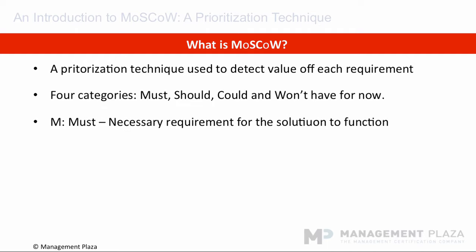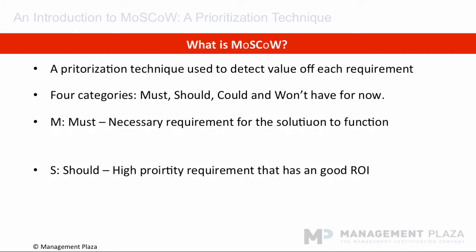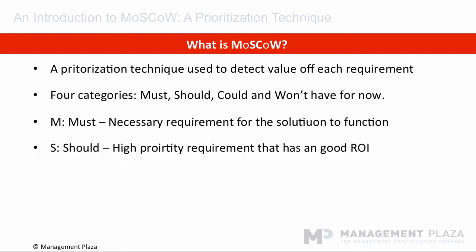Starting with must have: this is for a requirement that must be included in the final solution for the solution to work — for example, meeting a legal requirement, otherwise the software cannot be put into production. Next, should have: this represents a high priority requirement that should be included in the solution if at all possible. This is often a critical requirement but one which can be satisfied in other ways if strictly necessary — for example, we can use a manual process for a short time.